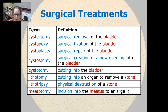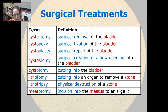Cystoplasty is a surgical repair of the bladder. Cystostomy is a surgical creation of a new opening into the bladder. And cystotomy is cutting into the bladder.